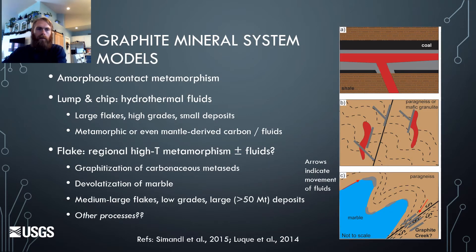Being an industrial commodity, graphite is classified as either amorphous, lump-and-chip, or flake based on size and crystallinity. These types generally form in different mineral systems, although the geologic settings of crystalline deposits, lump-and-chip, and flake overlap. Amorphous deposits form through local contact metamorphism of coal by intrusions. Lump-and-chip deposits are highly unusual — they are characterized by hydrothermal graphite veins hosted in granulite terrains and deposited from either supercrustal, metamorphic, or even mantle carbonic fluids. Some may be related to shallow magmatic or volcanic activity.